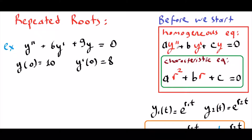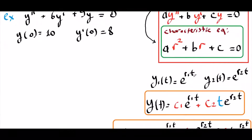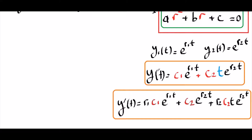Our homogeneous equation is again in the ay'' + by' + cy = 0 form. We are going to convert this homogeneous equation into a characteristic equation as our first step, and we are going to obtain a quadratic function. We solve for r1 and r2, our two roots, and put them in the form of the general solution: c1·e^(r1·t) + c2·t·e^(r2·t).